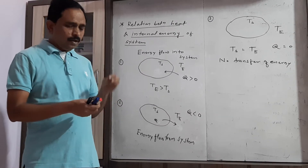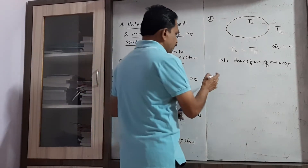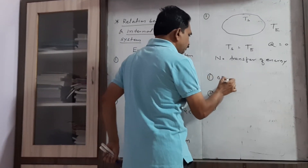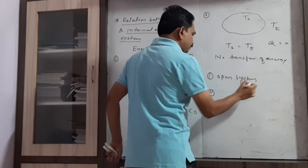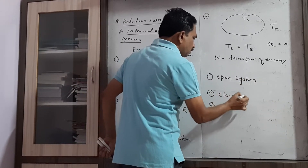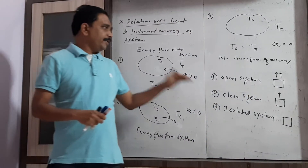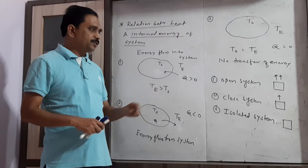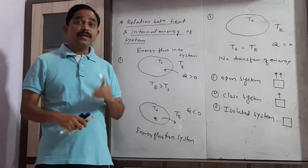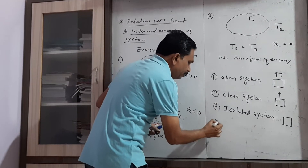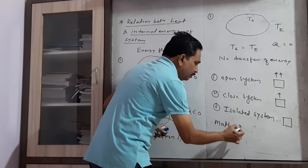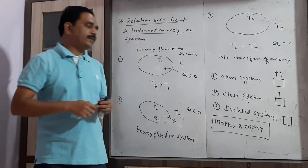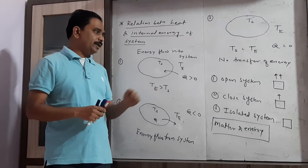We have seen three types of thermodynamic system: open system, closed system, and isolated system — depending upon whether there is an exchange of matter and energy from the system to the surrounding or environment.